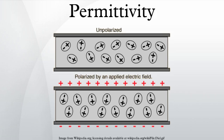In electromagnetism, absolute permittivity is the measure of the resistance that is encountered when forming an electric field in a medium. In other words, permittivity is a measure of how an electric field affects, and is affected by, a dielectric medium.